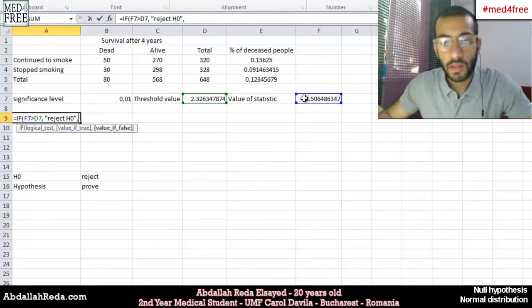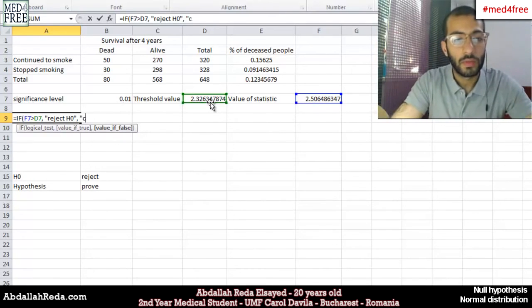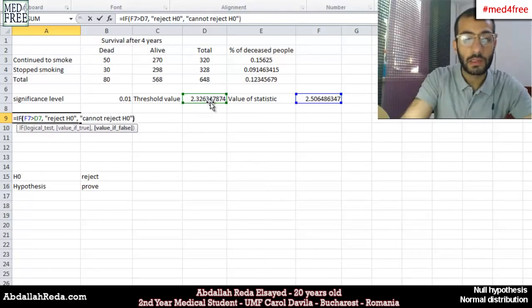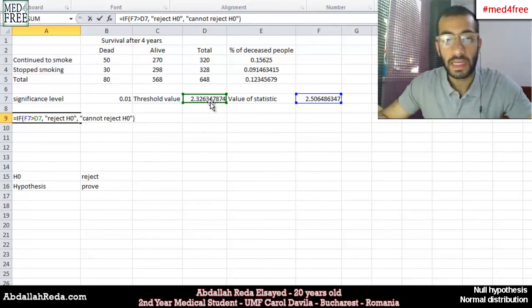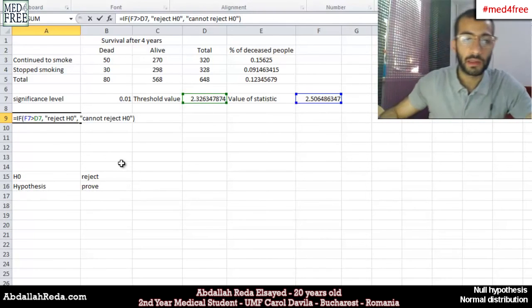And if this value is less than that value, you cannot reject the null hypothesis. So if you cannot reject the null hypothesis, this means that your results were insignificant. But if you can, this means that your results were significant enough to reject the null hypothesis at that point that you proved your hypothesis.